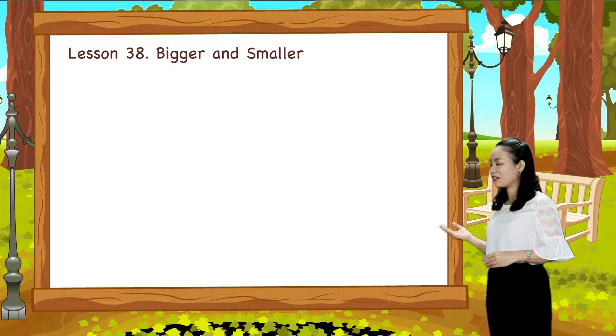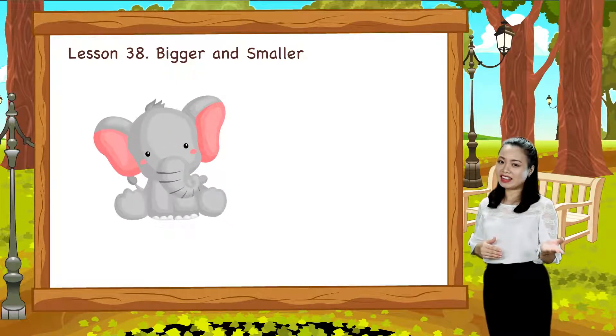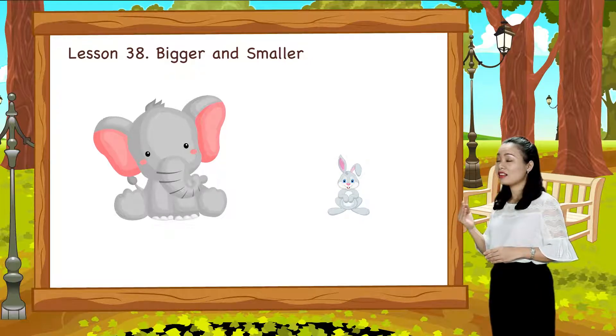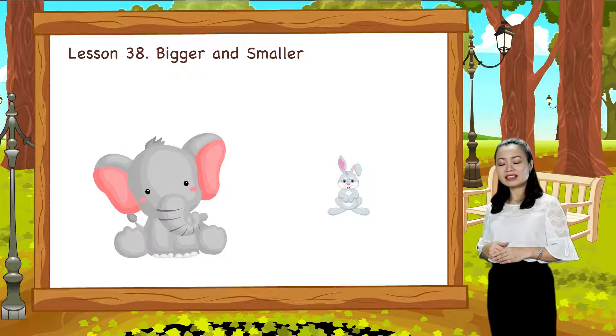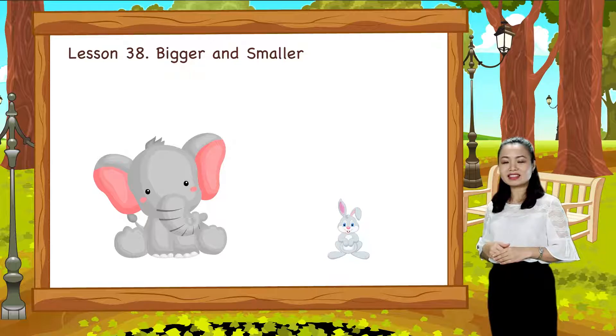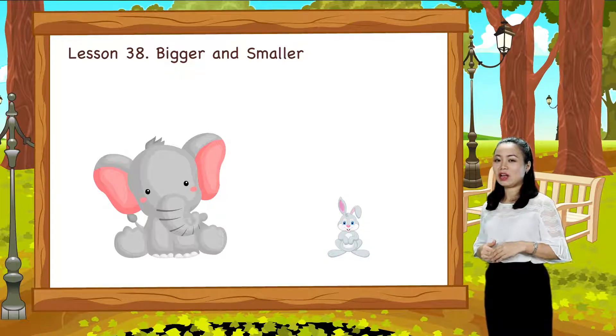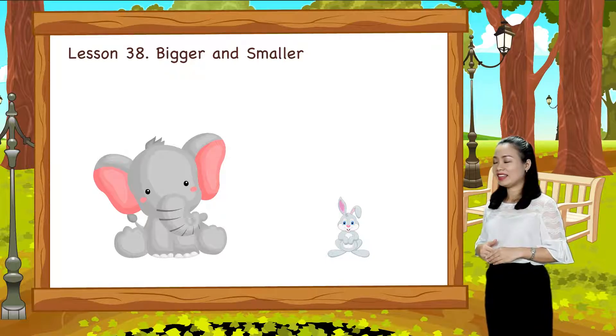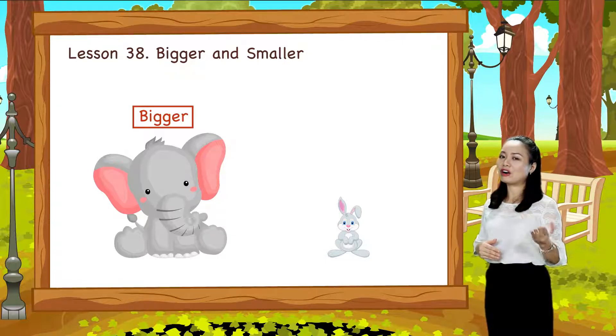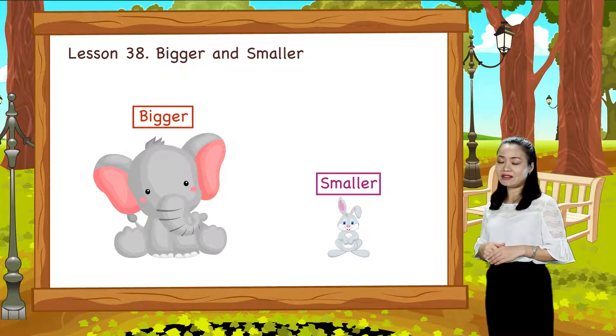Look, we have an elephant and a rabbit. The elephant looks very big doesn't it? The rabbit looks quite small doesn't it? So we say the elephant is bigger than the rabbit or the rabbit is smaller than the elephant.